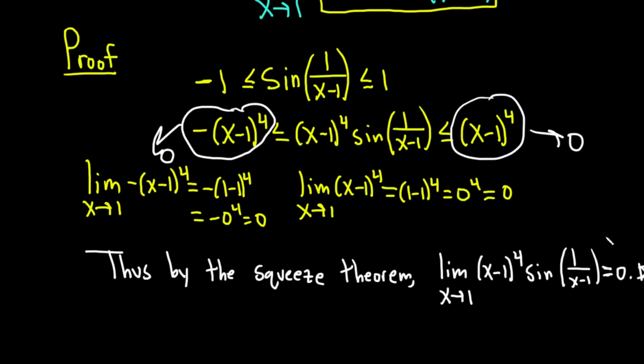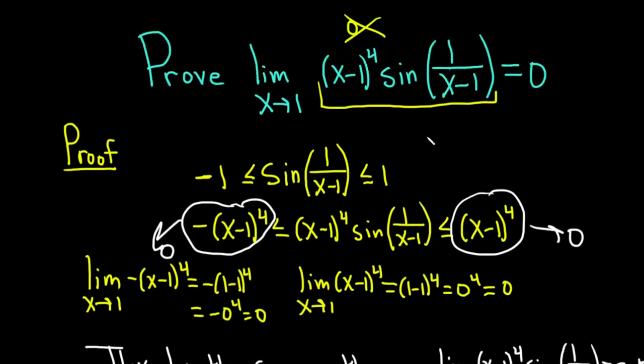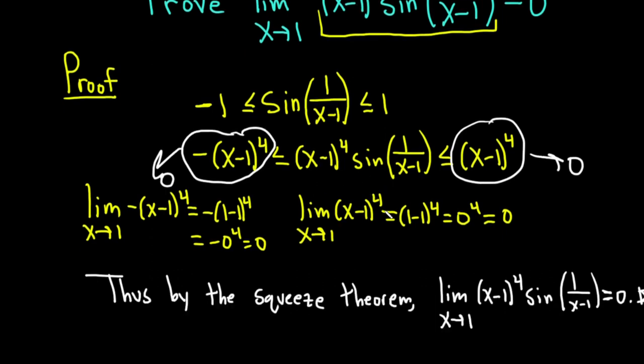So pretty simple proof with the squeeze theorem. Whenever you have a trig function like this, like a sine or a cosine, you can always do this. You can start with this step here and then just manipulate it to make it look like what you have and you should be able to do it. Hopefully this video has helped you. Good luck.